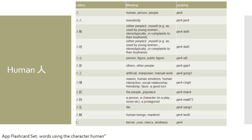If you want to say 'life' in Cantonese, you can say 人生. If you want to say 'human beings' or 'mankind,' you can say 人類. And lastly, if you want to say 'mercy' or 'kindness' in Cantonese, you can say 仁 — although written differently, the pronunciation is the same. If you wish to review these words in our Android app, it is under the flashcard set named 'words using the character 人.'